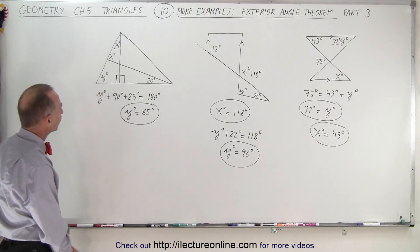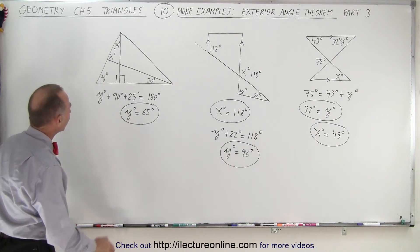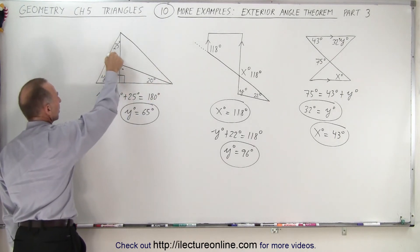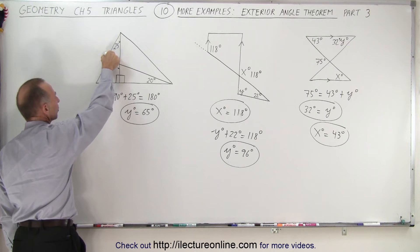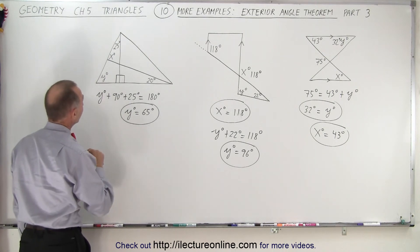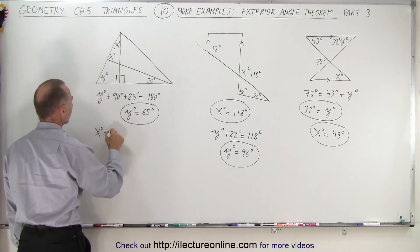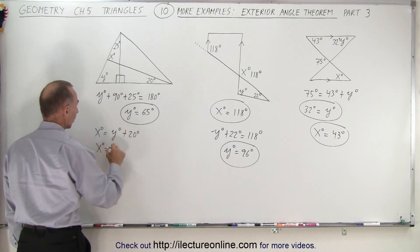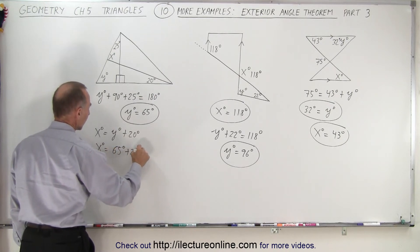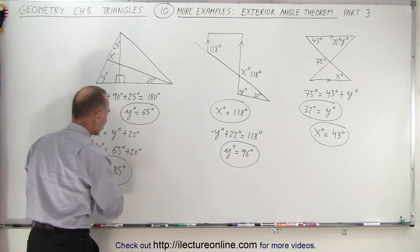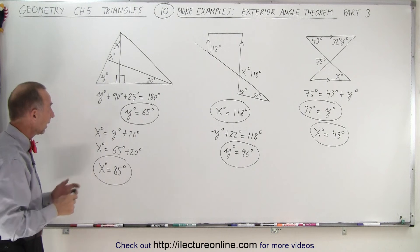Now what about x? I can see that x is the exterior angle for this triangle, so the measure of x must equal the sum of the two non-adjacent interior angles. Therefore x degrees equals y degrees plus 20 degrees, which equals 65 degrees plus 20 degrees, so x degrees equals 85 degrees.